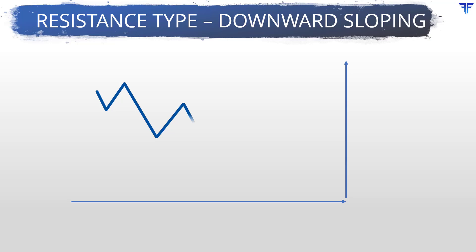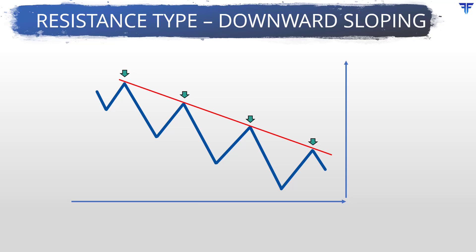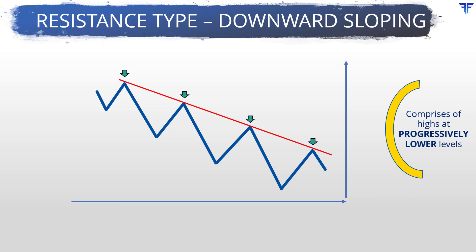Now, let us look at a resistance that is downward sloping to the right. Look at this chart here. If you closely observe, you will notice that the peaks are being made at progressively lower levels. In other words, the second high is below the first high, the third high is below the second high, and the fourth high is below the third high. As a result, if the highs are connected using a line, you will notice the line sloping downward to the right. So, a falling resistance occurs when two or more highs are concentrated at progressively lower levels.